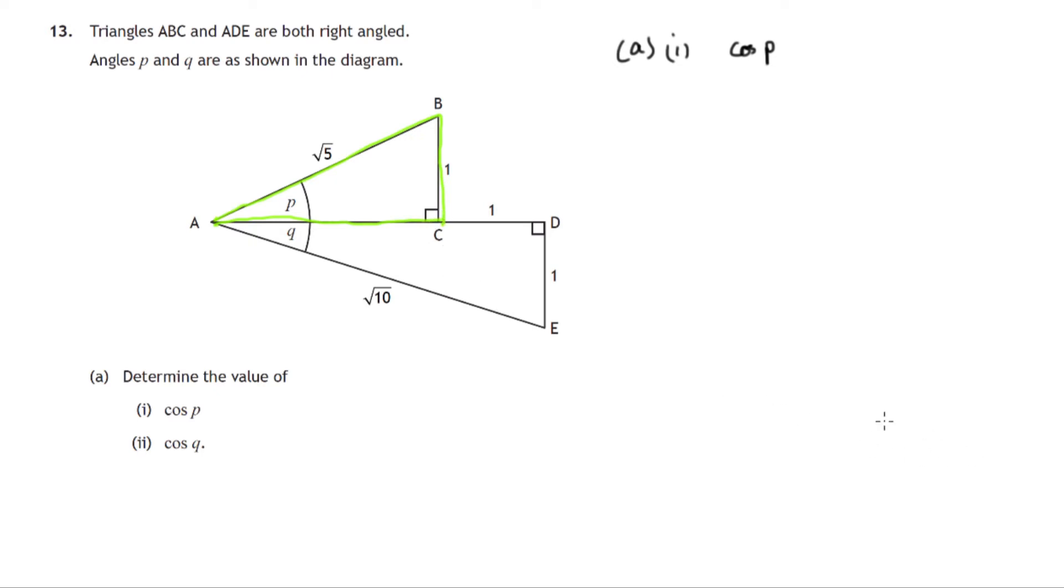And what do we know? We know the hypotenuse and we know this opposite side. But to get the cosine in a right angle triangle, remember SOHCAHTOA adjacent, that's A, C over hypotenuse. So we'll need to use Pythagoras in this triangle to find AC.